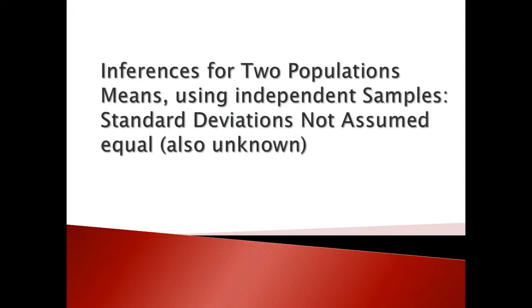In this section we are going to talk about inferences for two population means, standard deviations not assumed equal and also unknown.